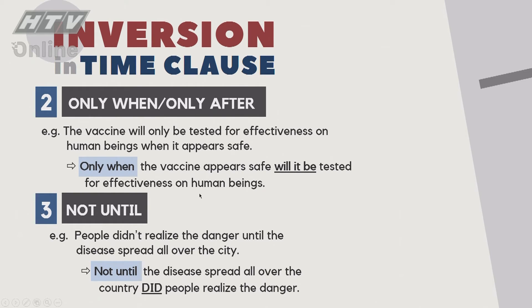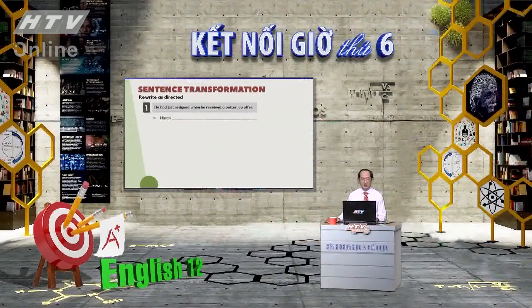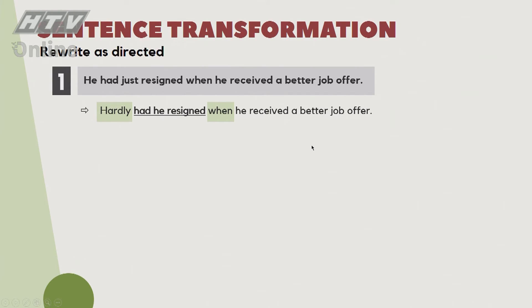Bây giờ chúng ta thử làm bài tập về đảo ngữ - viết lại câu. Câu số 1: Anh vừa mới từ chức thì được nhận công việc tốt hơn. 'Hardly' đi với 'when'. Cái gì vừa mới xảy ra? Việc từ chức. Đáp án: 'Hardly had he resigned when he received a better job offer.'